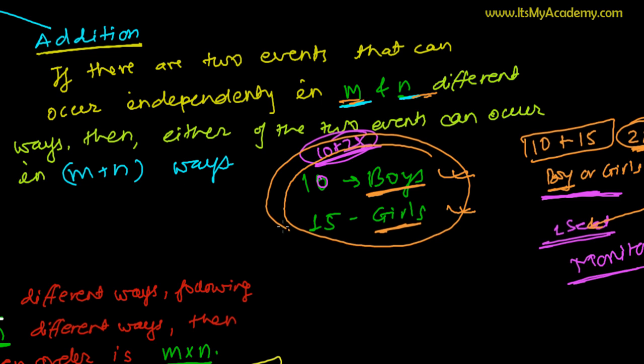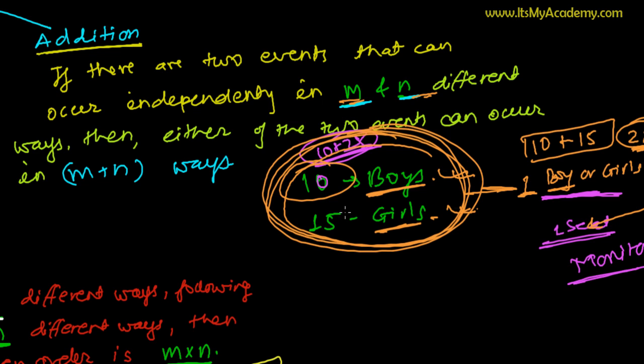And so, if we're going to select one from both of these groups - from the boys group or the girls group - if we're just going to select one, not from only boys, not from only girls, then the total possibilities will be the addition of these, that is 25 different ways. This is the fundamental principle of addition.